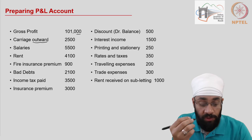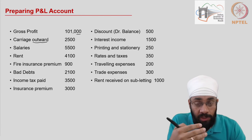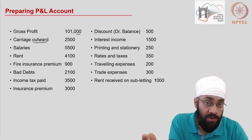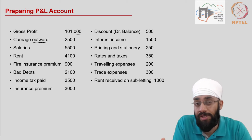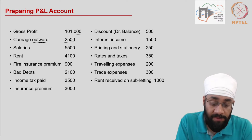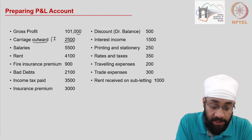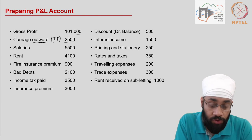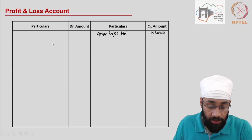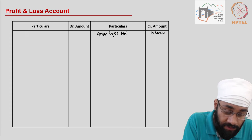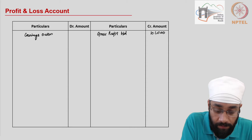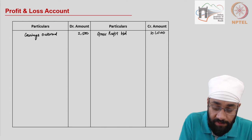Then you have carriage outward. The word 'outward' refers to the direction of the goods — goods are going out of the business, meaning you did some sales and you are giving a free home delivery to the customer, so you are spending on transportation. This is an indirect expense, so you will show this on the debit side in the profit and loss account. Carriage outward: two thousand five hundred.